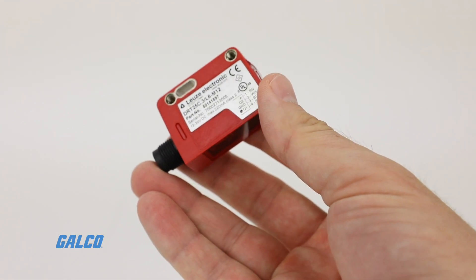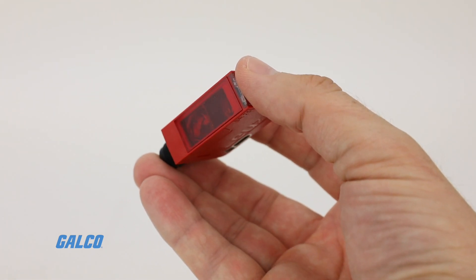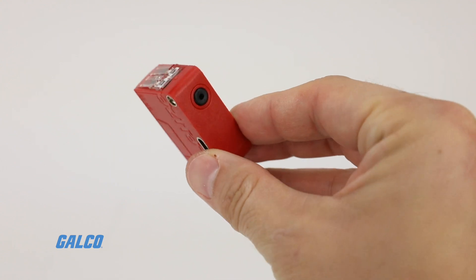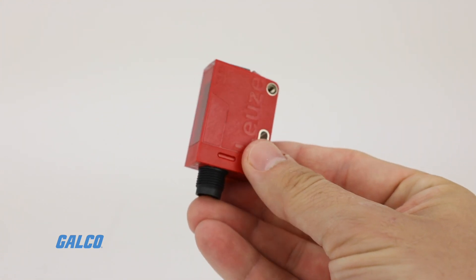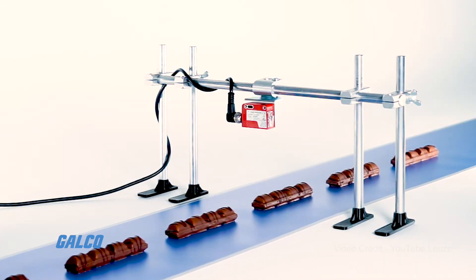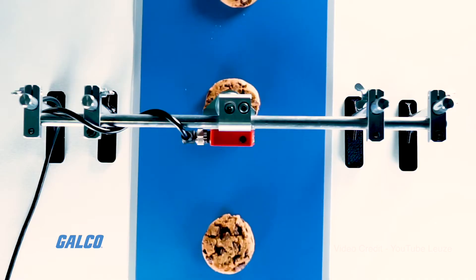The DRT25C provides detection of objects, including those with difficult shapes and surfaces, making sure your system runs continuously and prevents downtime.